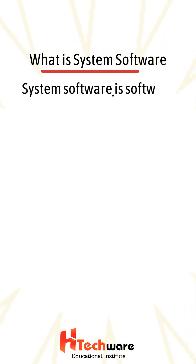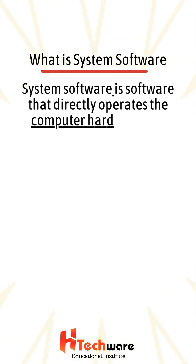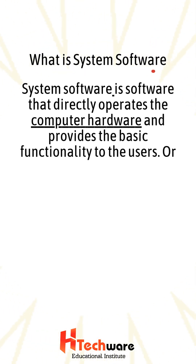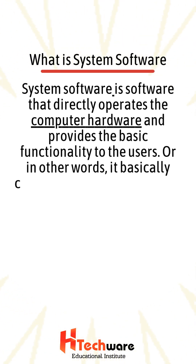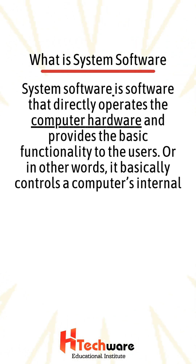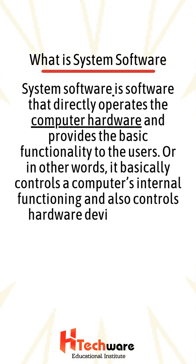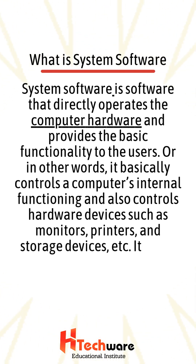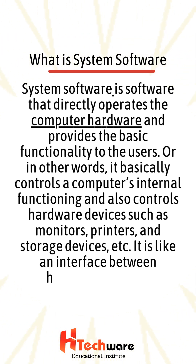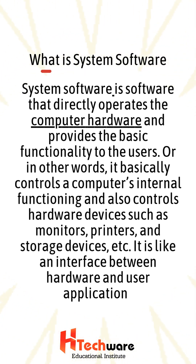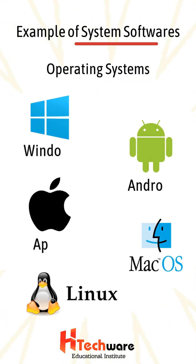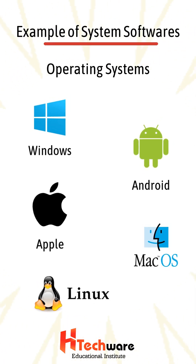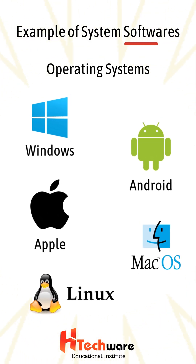What is system software? System software is software that directly operates the computer hardware and provides the basic functionality to the users. In other words, it basically controls a computer's internal functioning and also controls hardware devices such as monitors, printers, and storage devices, etc. It is like an interface between hardware and user applications. Examples of system software include operating systems such as Windows, Android, Apple, Mac OS, and Linux.